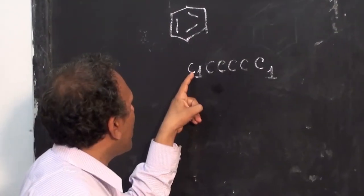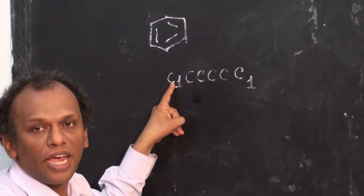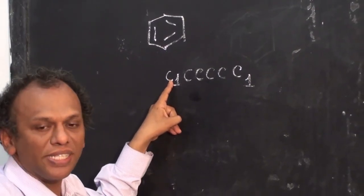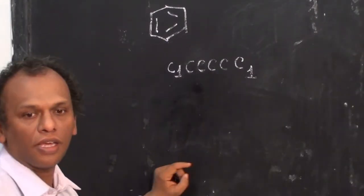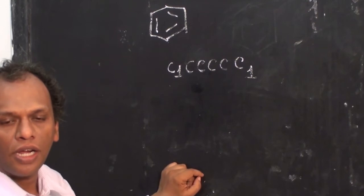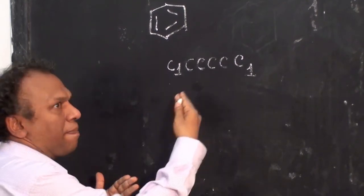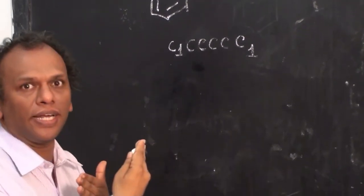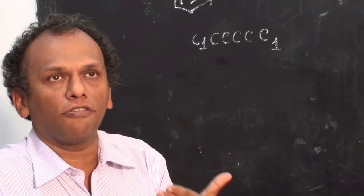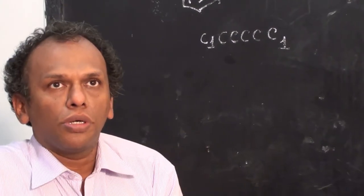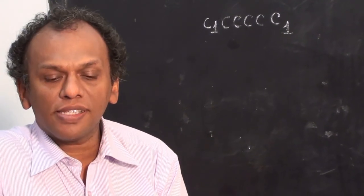The atoms are represented by their atomic symbols. If there is a branch, then we have to represent it in parentheses.